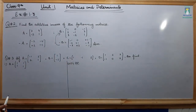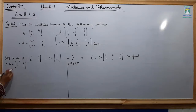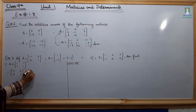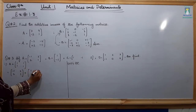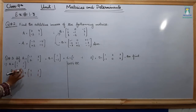In part number 1, we are going to find A plus the matrix [1, 1; 1, 1]. So write matrix A, that is [minus 1, 2; 2, 1], plus the matrix [1, 1; 1, 1]. In addition, what do we do? We add the corresponding entries.